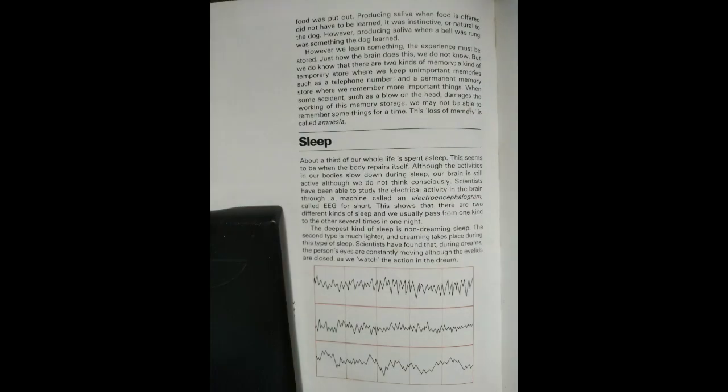An EEG machine can see the way in which we sleep, and a pen traces the information onto a moving paper belt. The regular alpha rhythm waves — waves with a frequency of 10 cycles per second — change as a person falls asleep to irregular waves, and later short waves interrupted by bursts of faster waves, which are called spindles.